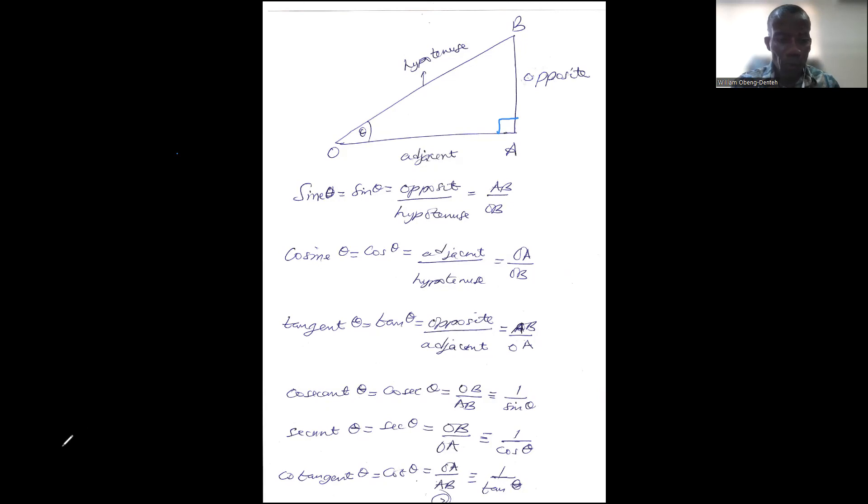From there, we can now move on to define the trigonometric ratios. We have today the inverses or reciprocals. So we have sine theta (S-I-N-E theta). We want to find the sine of this theta. It is defined as—this is the abbreviation, sin theta—your opposite side over the hypotenuse. So it's AB over OB.